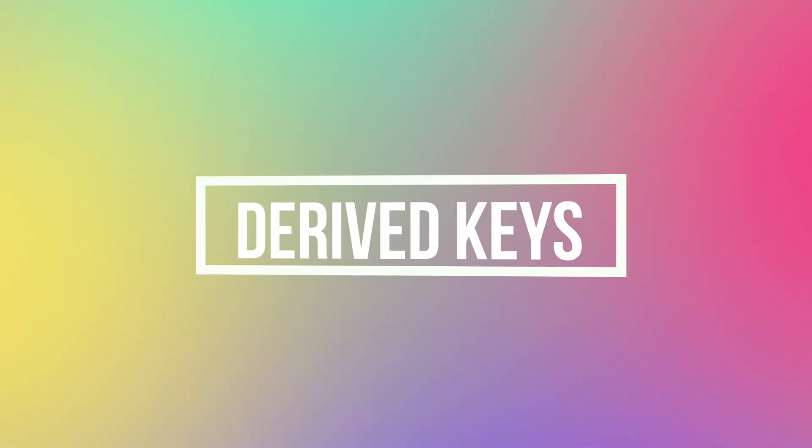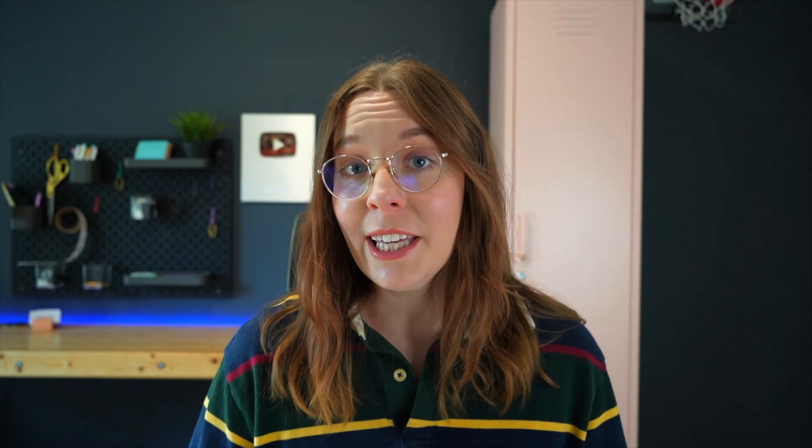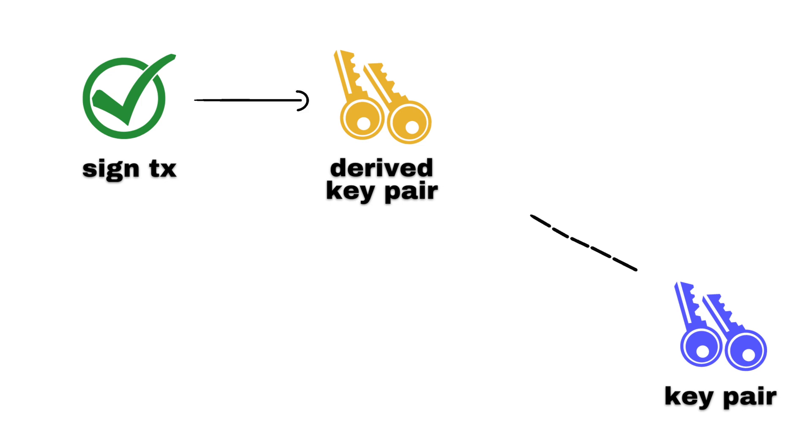Fortunately, we can get around these limitations thanks to Deeso's derived keys. A derived key is a crypto key pair that can sign transactions on behalf of another key pair.